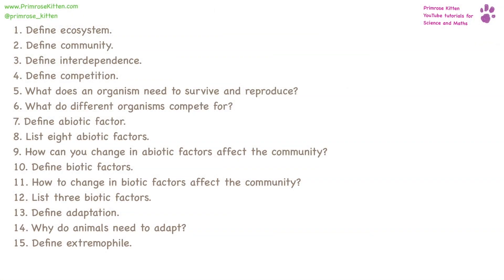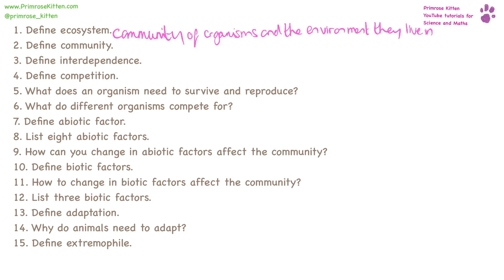An ecosystem is a community of organisms and their environment. A community is a group of people, plants, and animals all living in the same place. Interdependence is where two or more organisms are dependent upon each other.